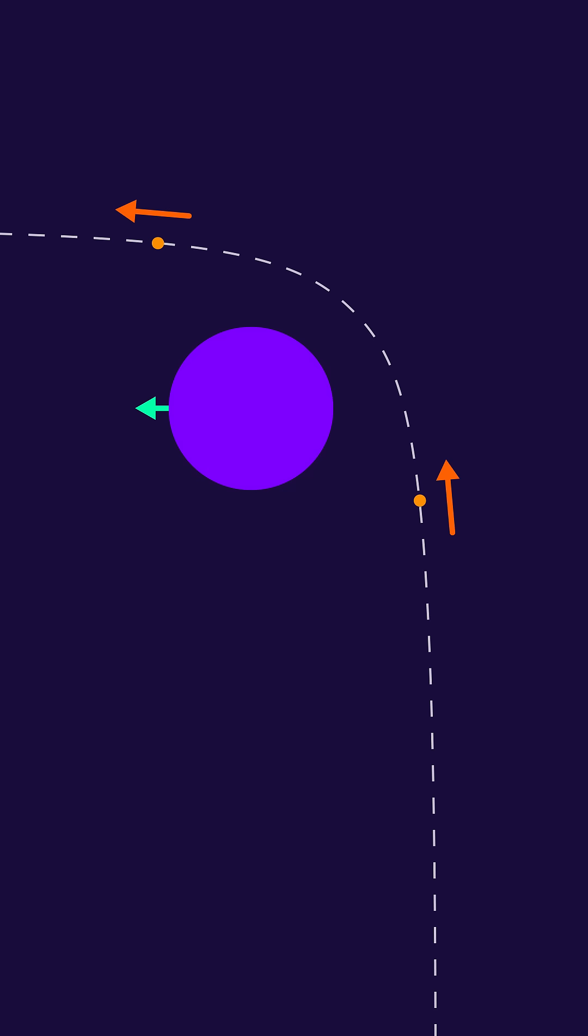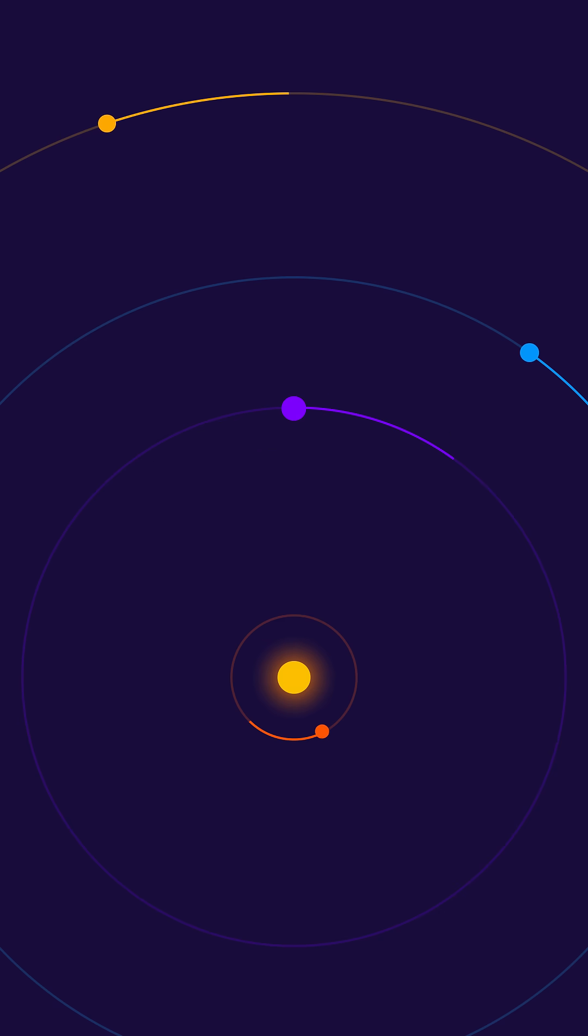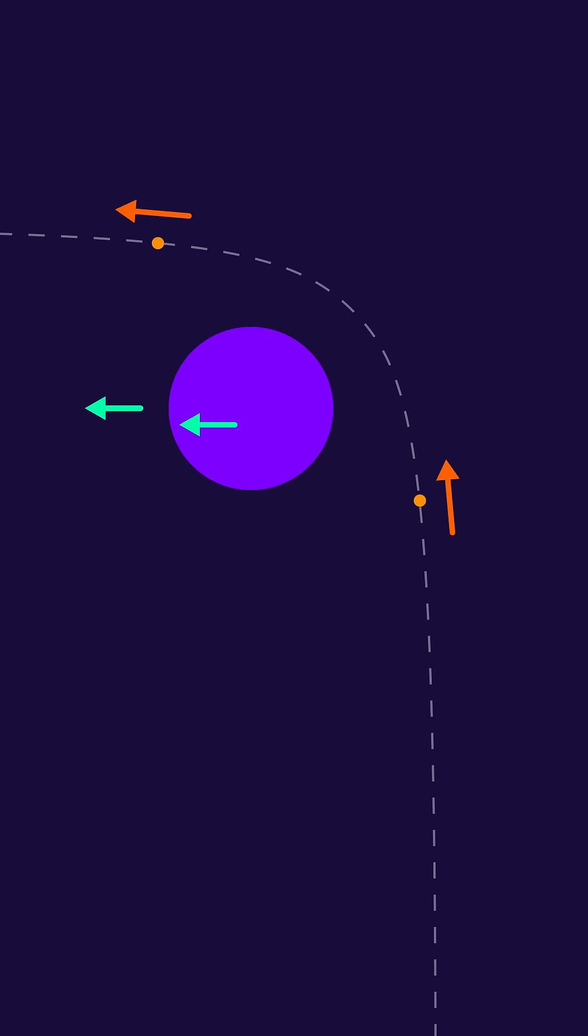What we haven't done yet is take the speed of the planet into account. After all, it's orbiting around the sun. So we add that speed to our spacecraft as it's approaching and as it's going away.